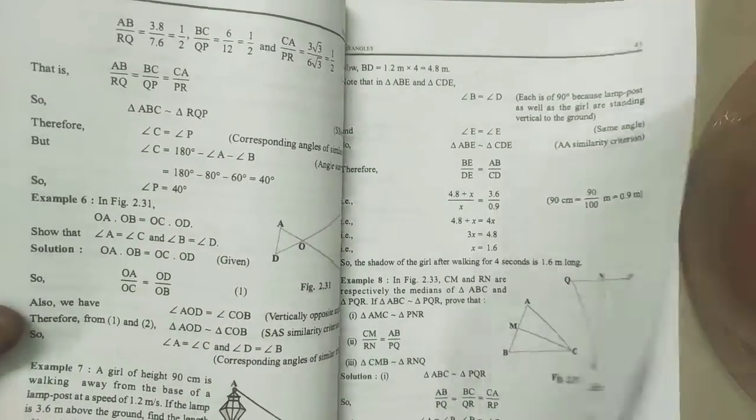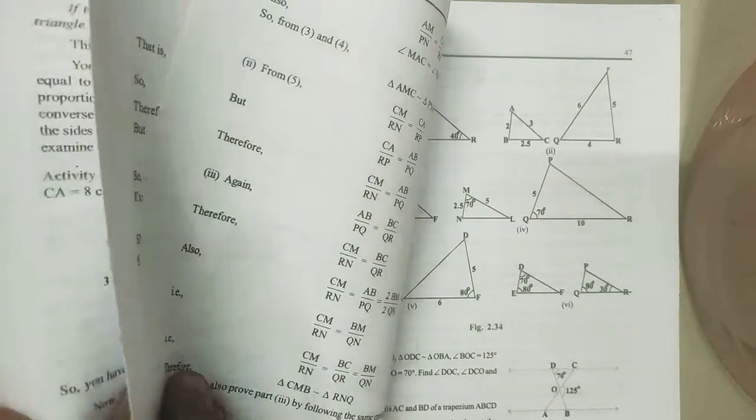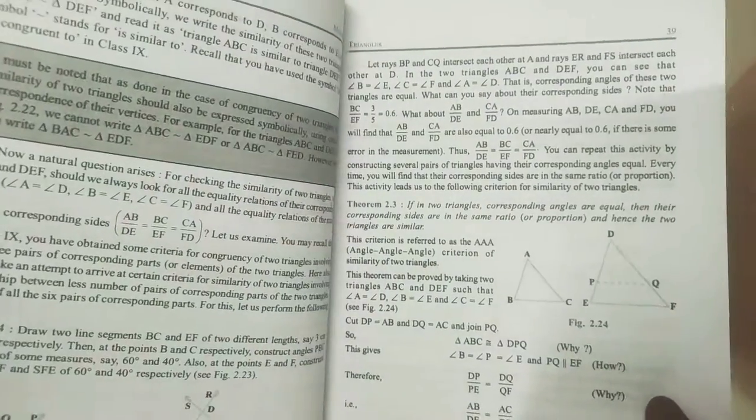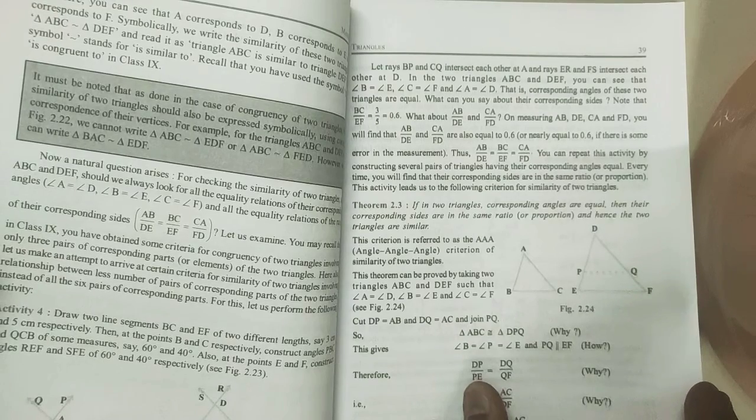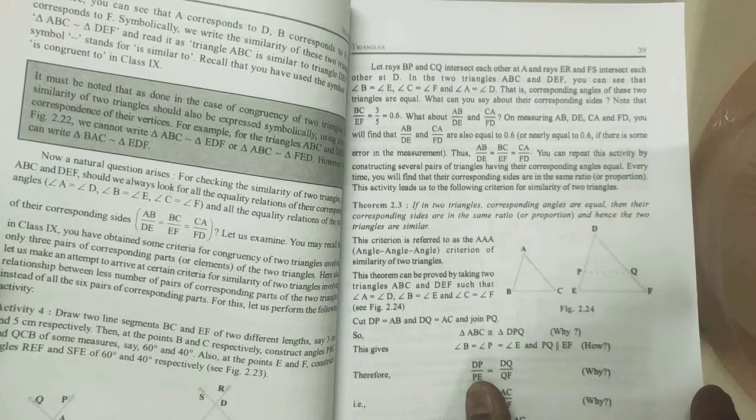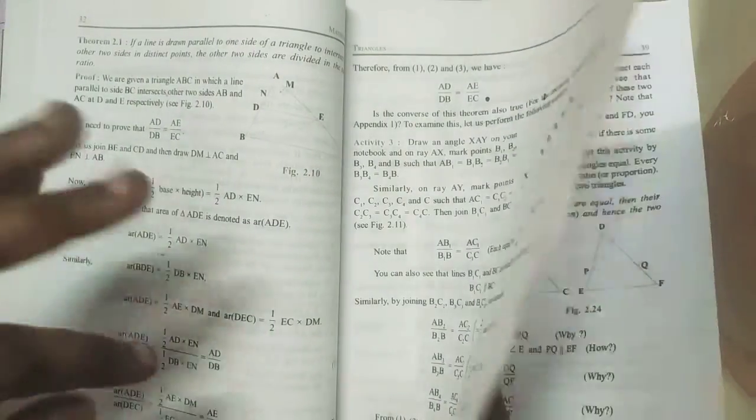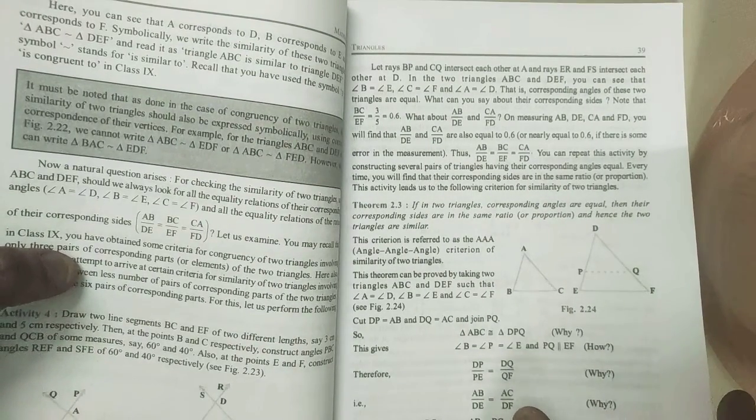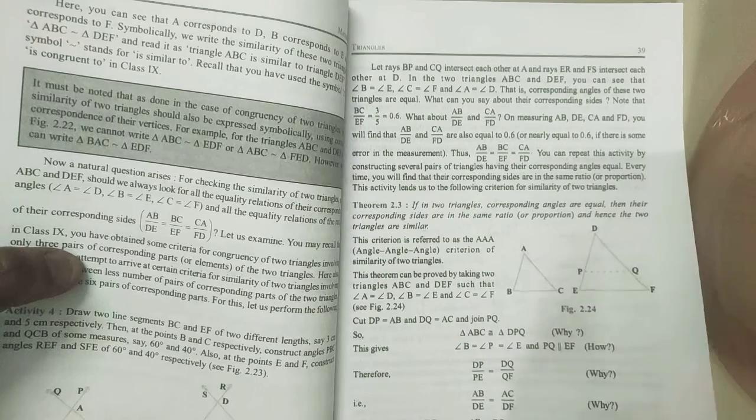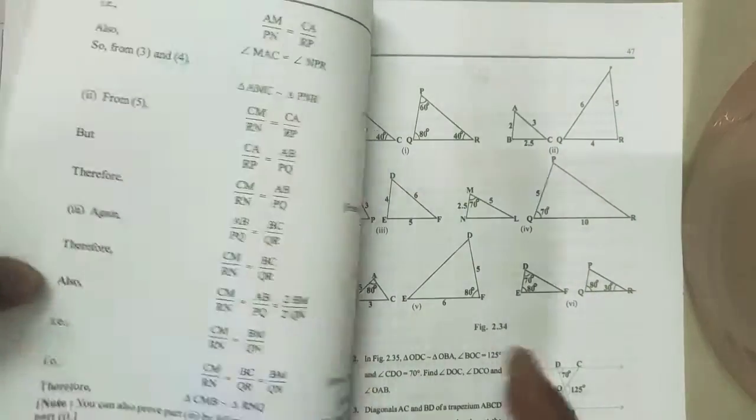The next theorem is Pythagoras theorem. This is also one more theorem, AAA similarity theorem. But mostly 90% of percentage, it is chance of getting BPT, Pythagoras, area of similar triangle. This they will ask for 3 mark questions. But it is not a repeated question. So anyhow you should prepare that. If you prepare that 3 theorems, you can prepare even this theorem.